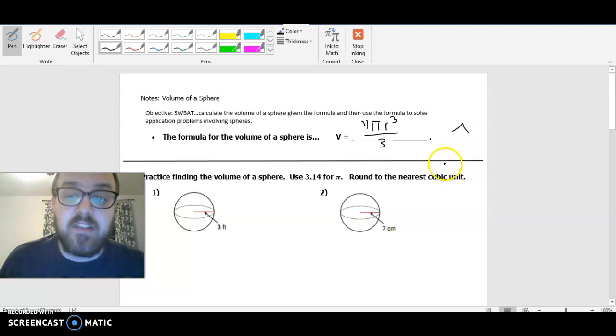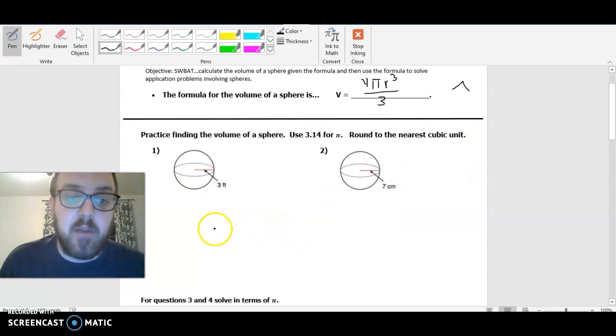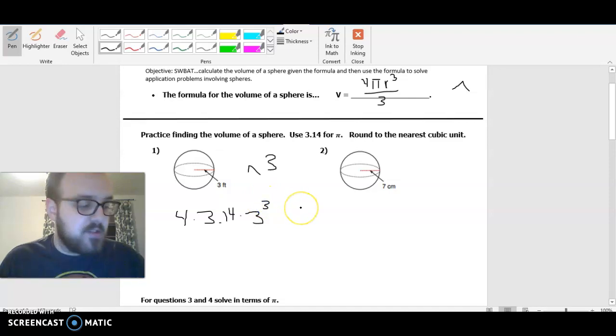Okay, so when I go to plug this in, I'm going to put in my numbers like for this one, number one, I'll put in 4, I'll put in 3.14 as an approximation for π, and then I'm going to go ahead and put in the number 3, and then that's where I'm going to hit this caret button and hit 3 again. So you'll see that'll give me that cubed part right there.